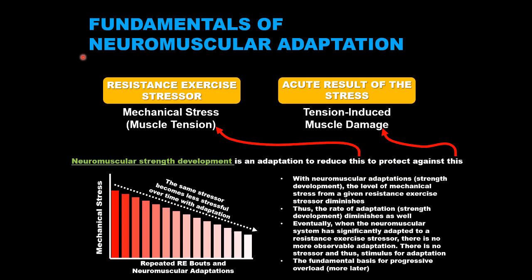The neuromuscular system adapts to this mechanical stress over time because the stress can cause damage — not necessarily because it does cause damage. It is important to understand that muscle damage is not the stimulus for neuromuscular adaptation, but it is rather the basis for neuromuscular adaptation. Remember, the principal reason for adaptation is to protect the cells and tissue from damage. So damage is not necessarily stimulating the adaptation; rather, the adaptations occur to minimize the risk for damage. The fundamental stimulus for adaptation is the mechanical stress. You do not need to have damage to achieve adaptation.